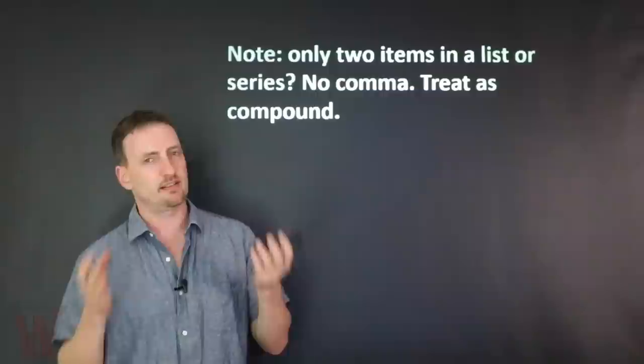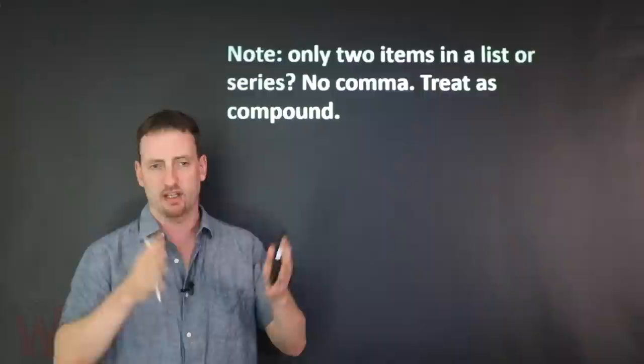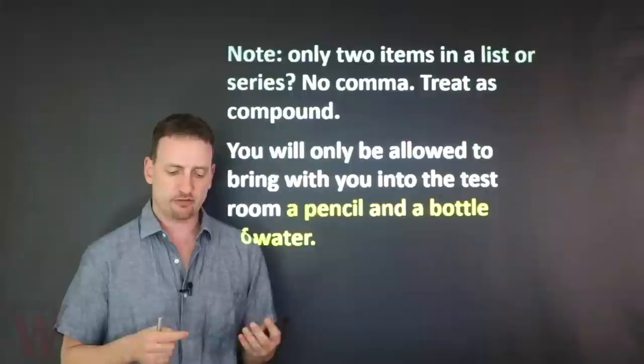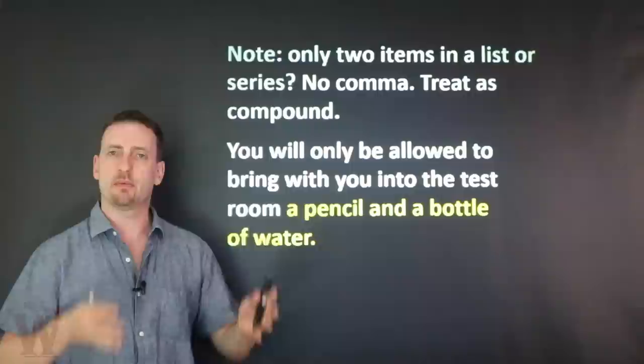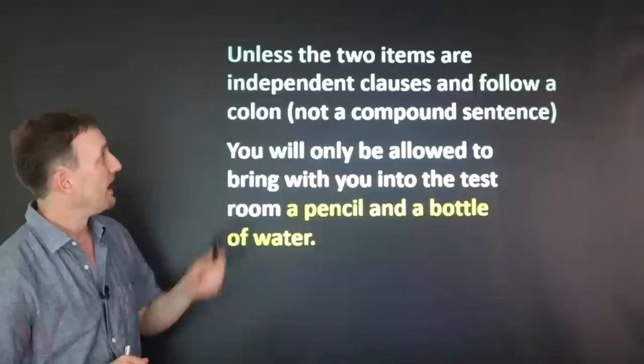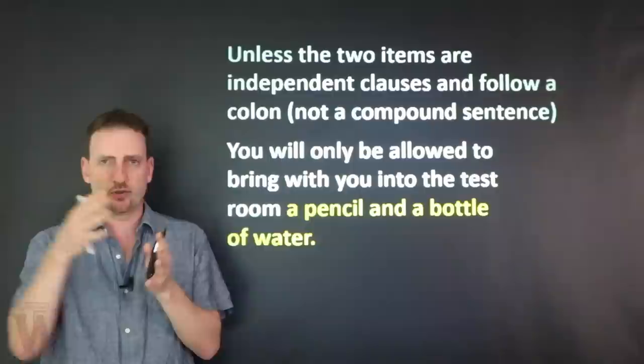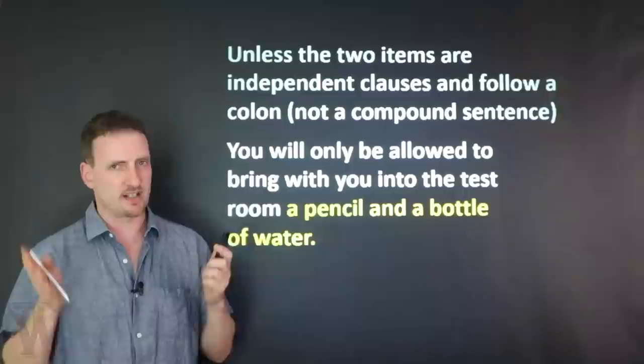Now, if you only have two items in your list, it's not really a list — it becomes a compound. Treat it as a compound: no comma between the two things, just A and B. For example: 'You will only be allowed to bring into the test room a pencil and a box.' Those are your two items — no comma; it's a compound predicate.